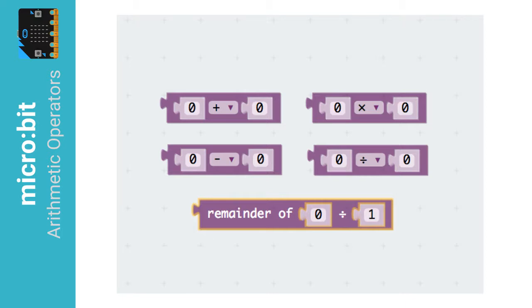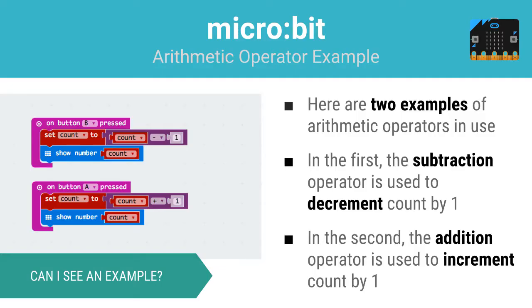Know your lingo: so-called operators perform operations on one or more operands. Let's take a look at a specific example of arithmetic operators in action. Here are two examples which demonstrate how you can use these operators. In the first block of code, the subtraction operator is used to decrement the count variable. In the second block of code, the addition operator is used to increment the count variable. Using arithmetic operators is just that simple.